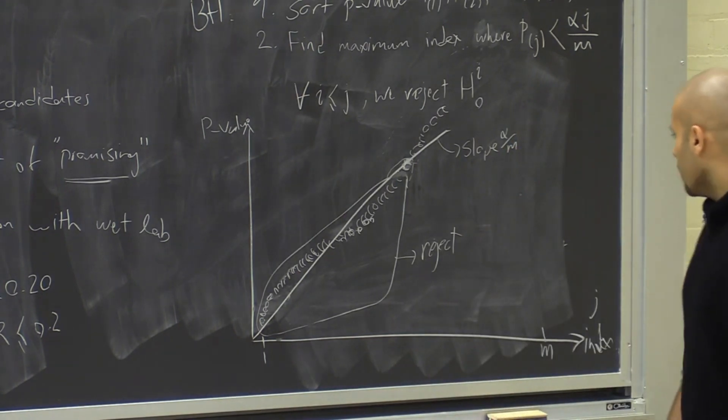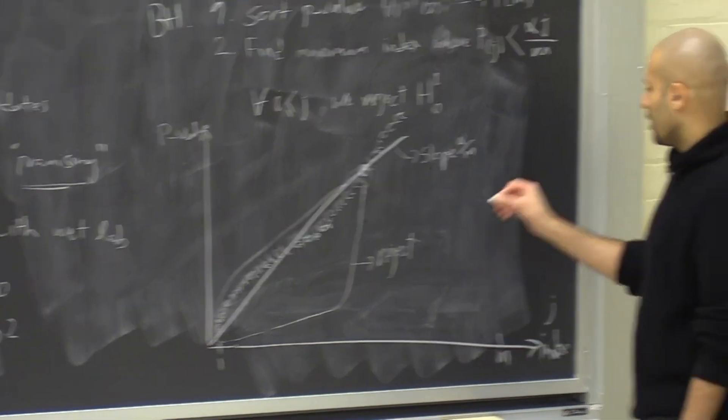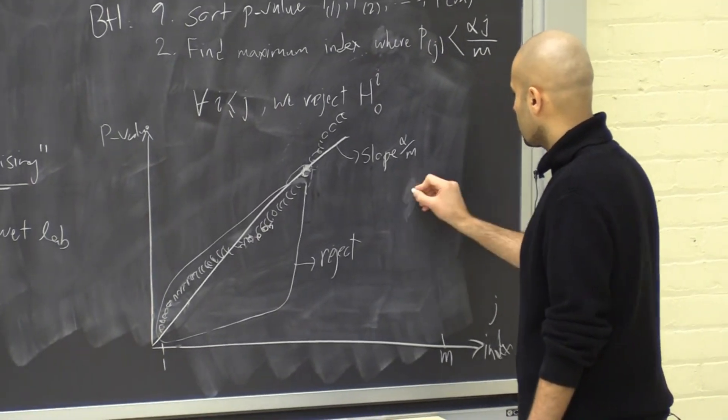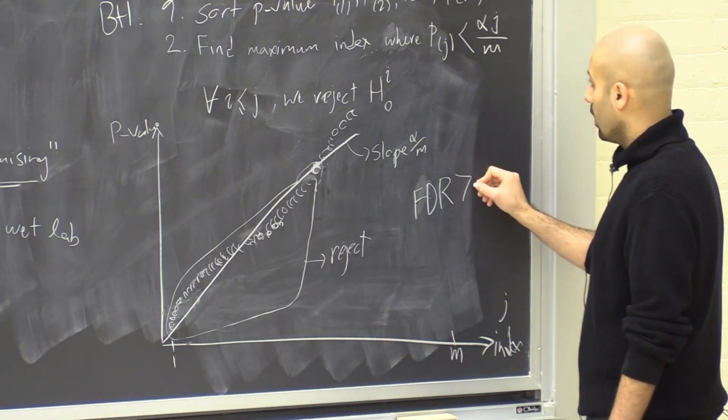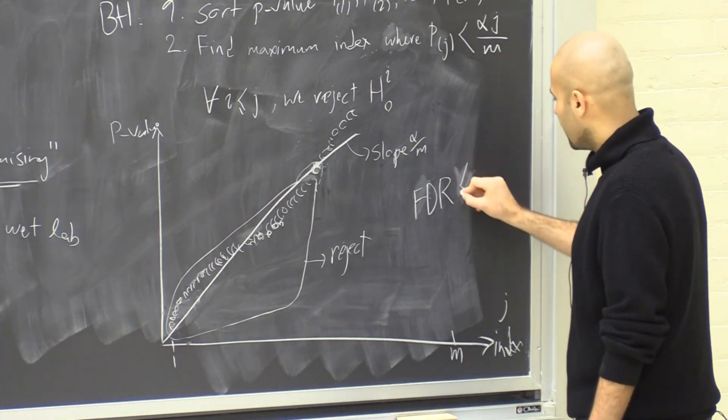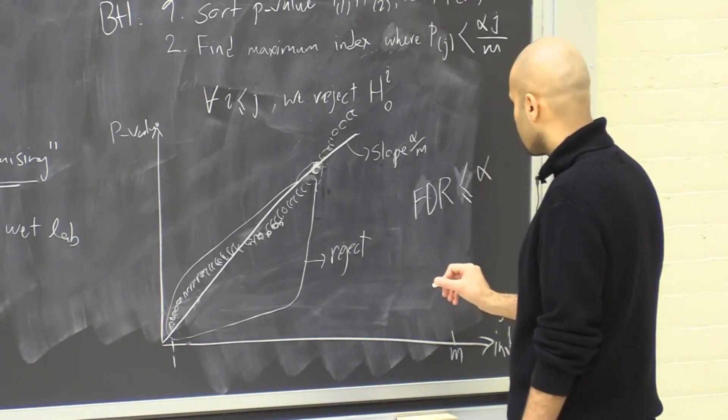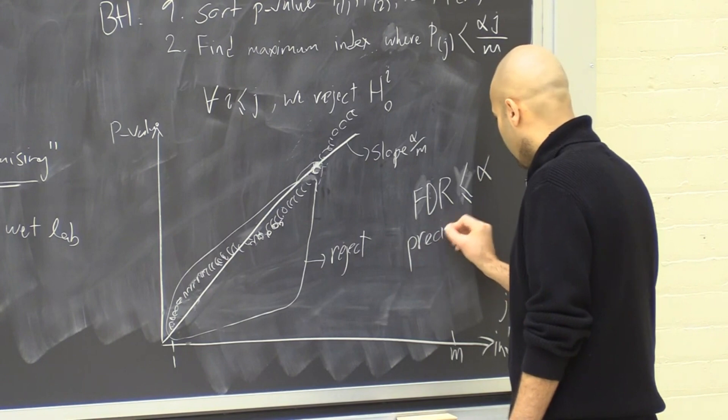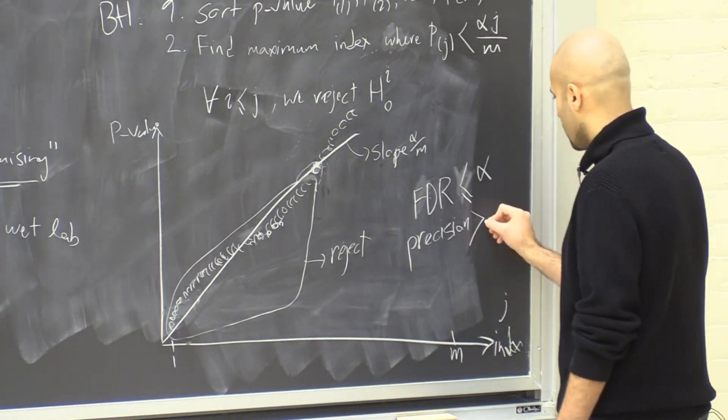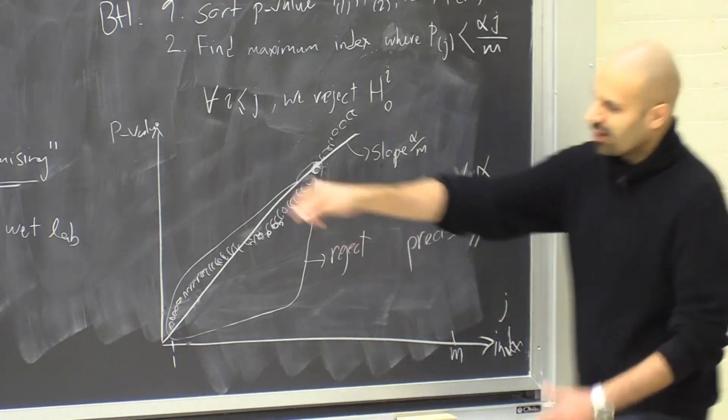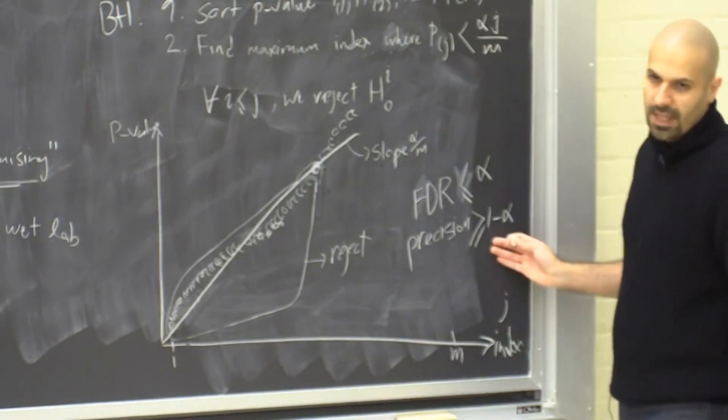So this method has a different guarantee. It is not about family-wise error rates anymore. With this method, we get the false discovery rate being bounded by alpha, which is like 20 percent, which means that precision, so I'm just trying to convert it in computer sciency language, essentially we have a lower bound for precision. We just say that we want a process for this where the precision is not less than 80 percent. That's the same thing.